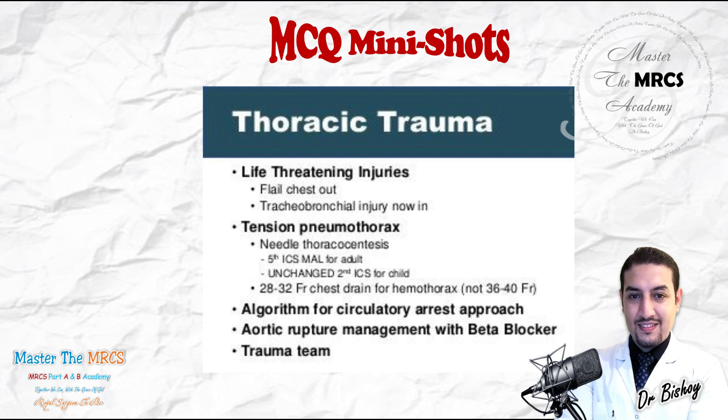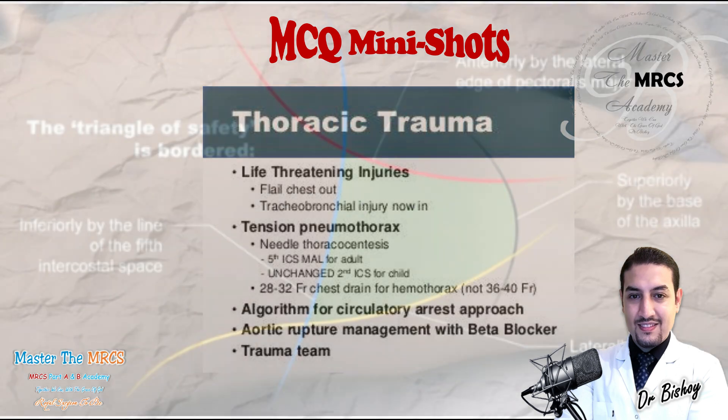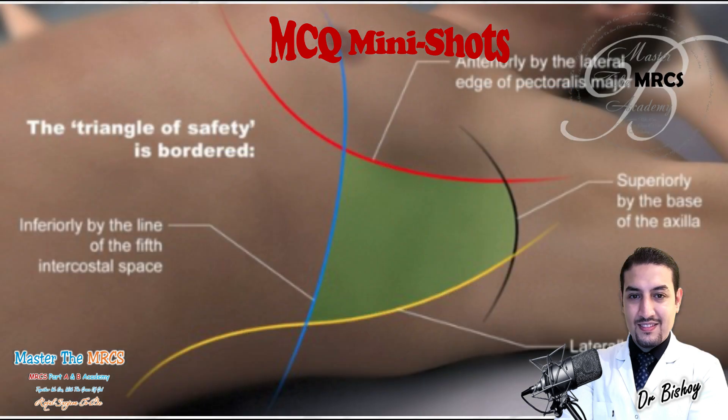The definitive chest tube for both will be in the fifth intercostal space, anterior axillary line, in the safety triangle. Take care and be safe.